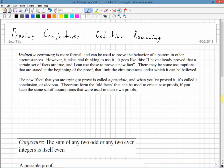Proving conjectures. Deductive reasoning. Deductive reasoning is more formal and can be used to prove the behavior of a pattern in other circumstances. However, it takes real thinking to use it.